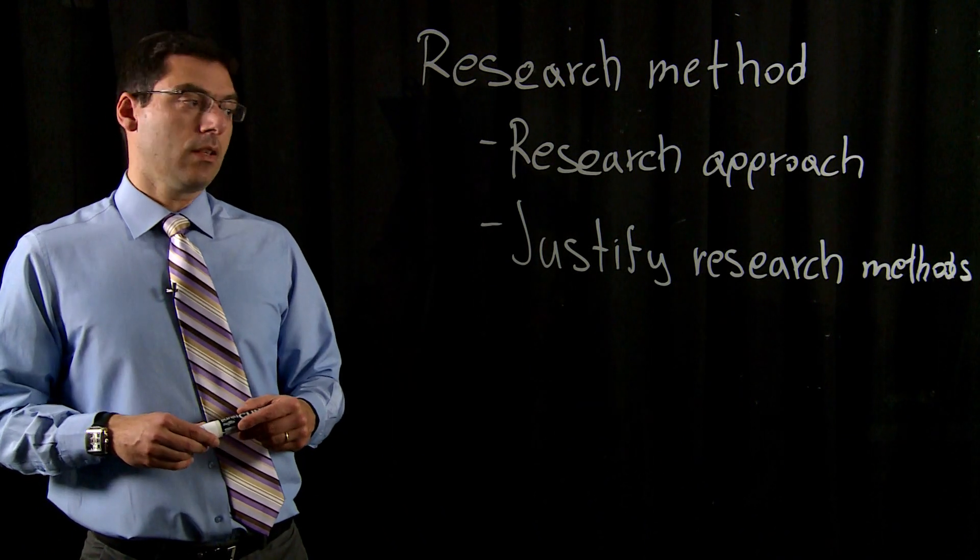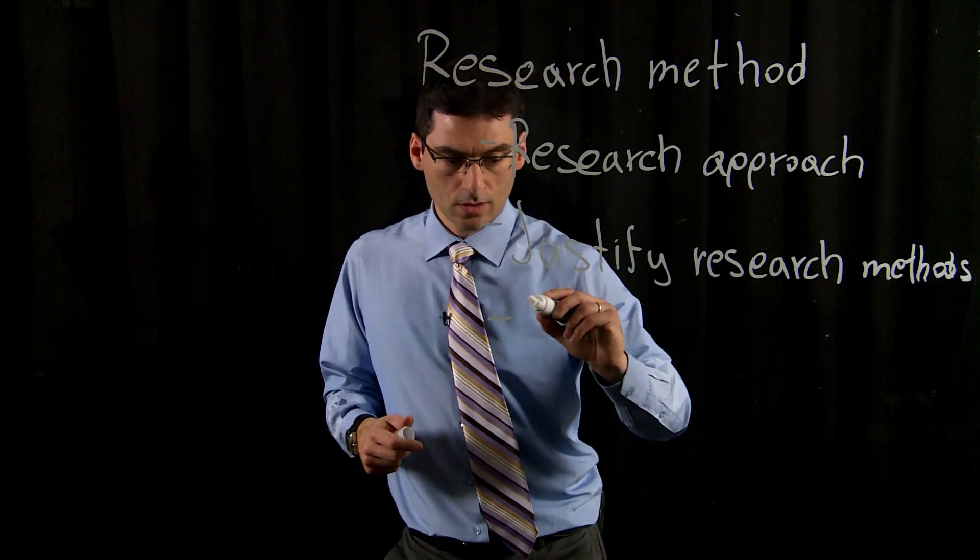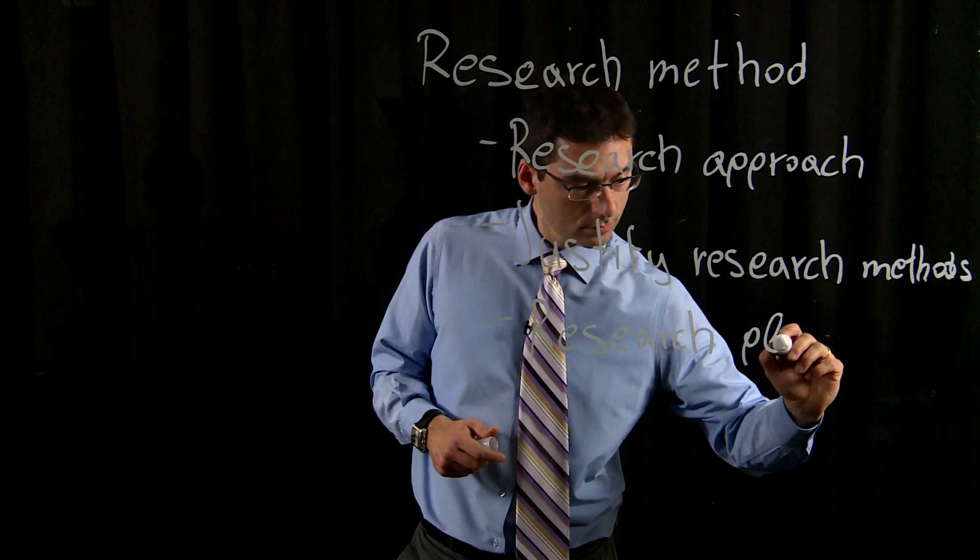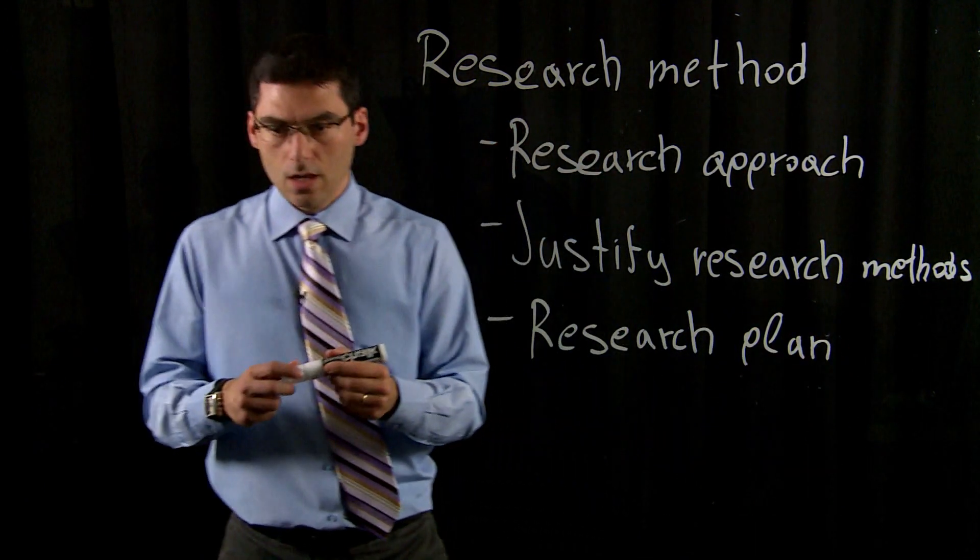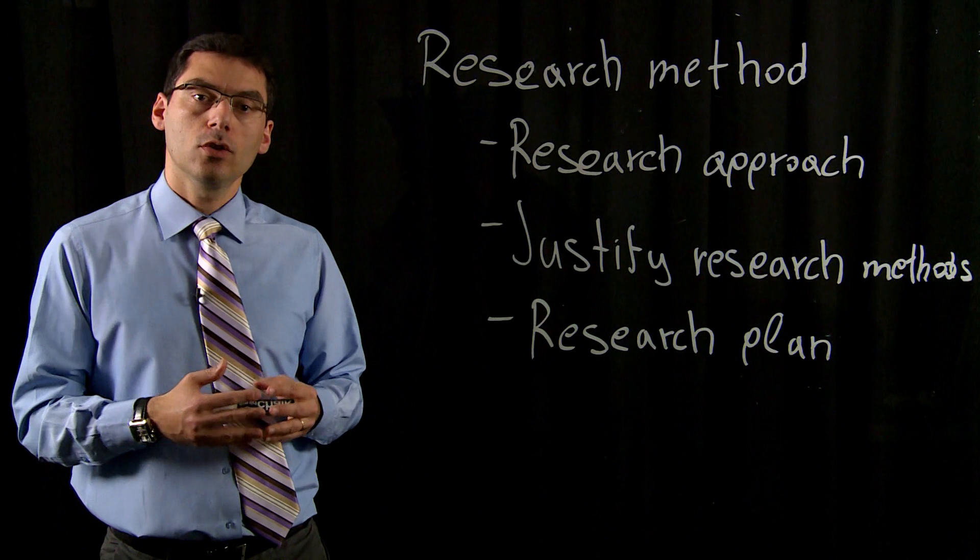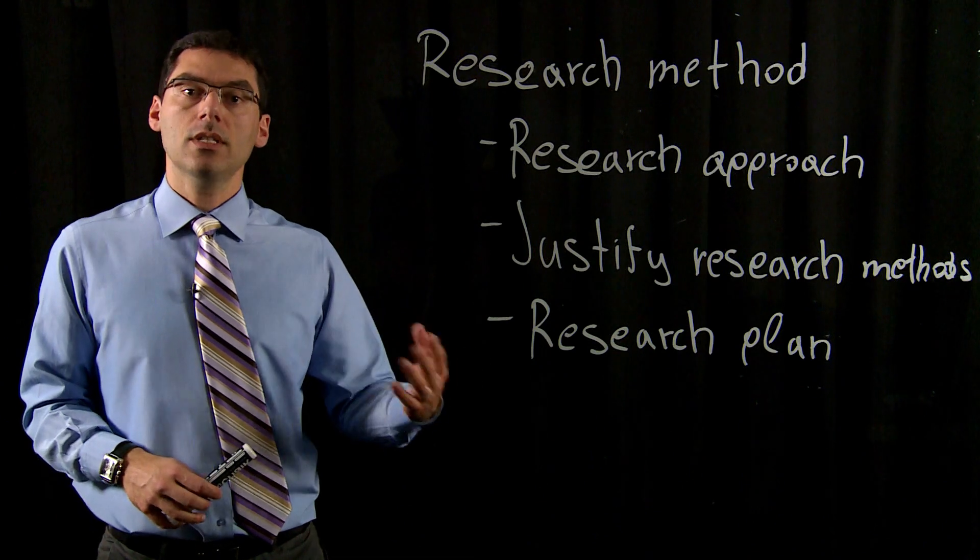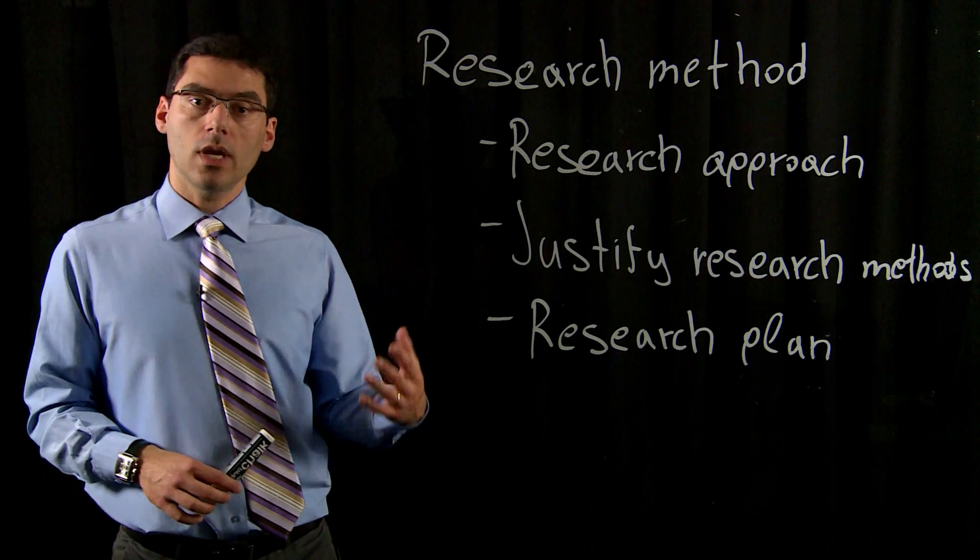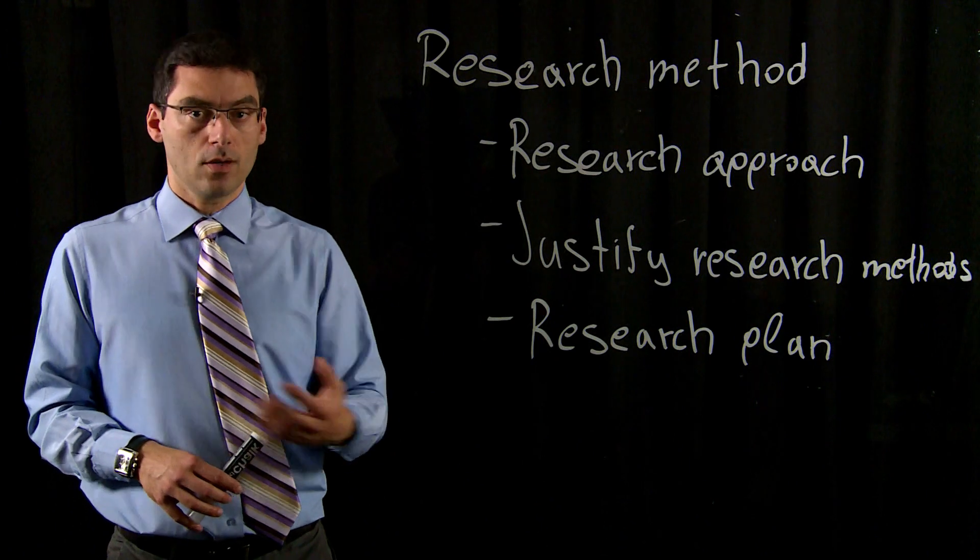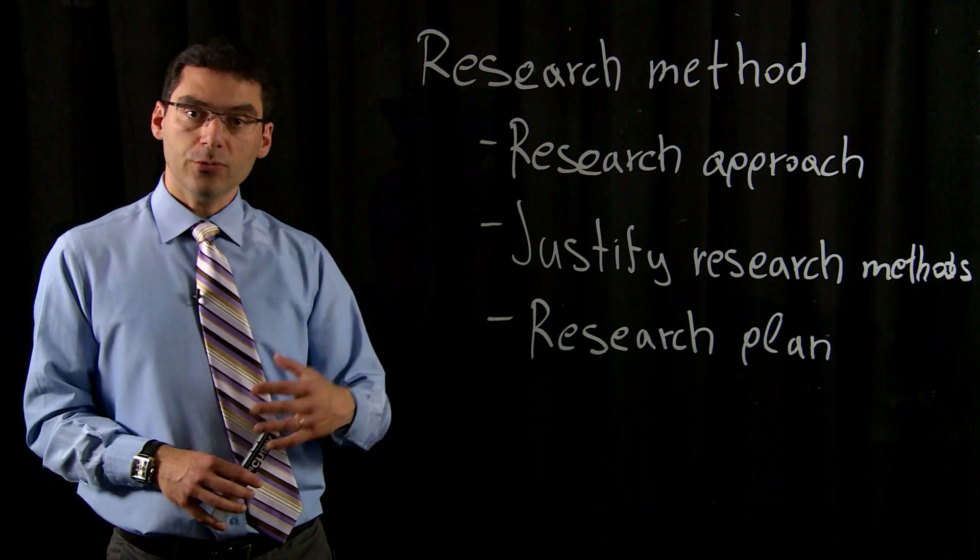If we justify the research method, then we can go to what we will call research plan. The research plan is really how are we going to execute the research, specifically when it comes to the order. For instance, are we doing first the interviews and then the questionnaires? We might want to gain an initial understanding through interviews and then be able to construct questionnaires and use them after the interviews.